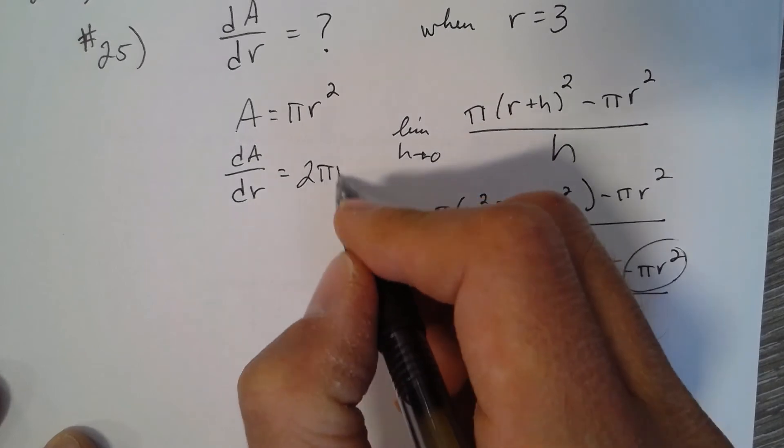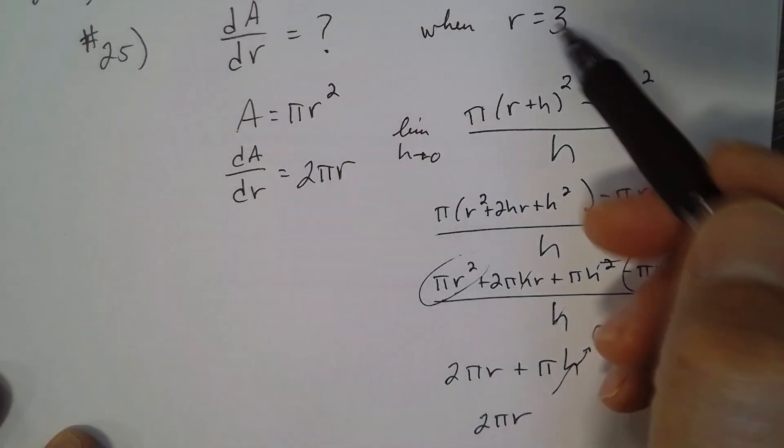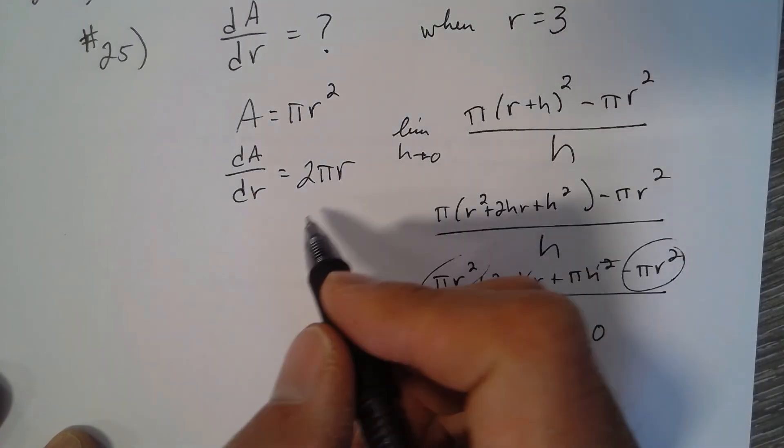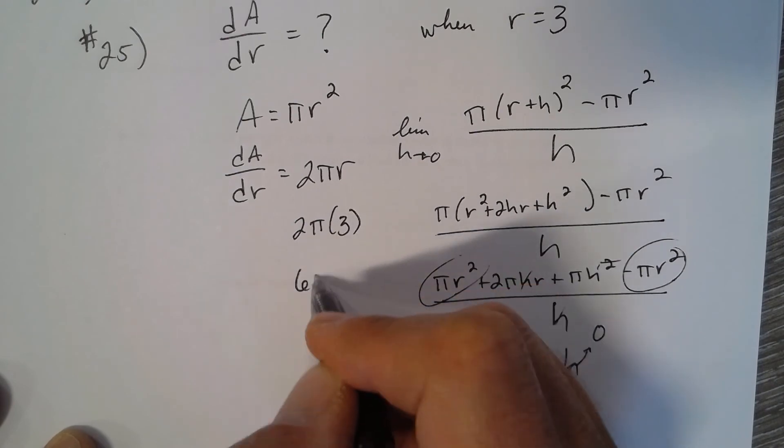dA/dr equals 2πr. Then we want to know when the radius is 3, so we plug 3 in: I get 2 times π times 3, or 6π.